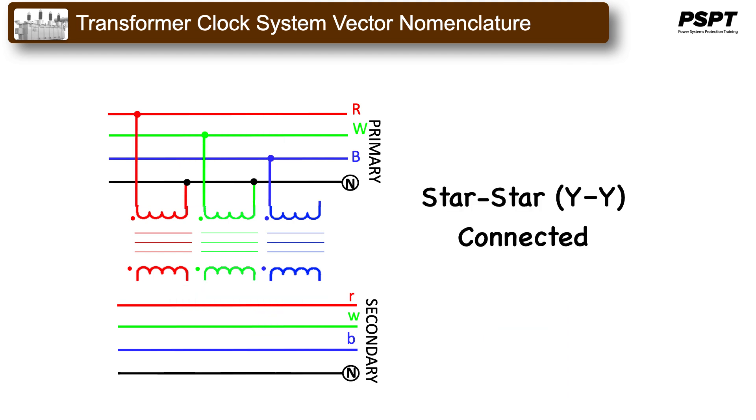Take, for example, a star-star, or YY-connected transformer. We have already looked at this connection, and it is fairly straightforward. However, if we reverse the connections of each of the secondary windings, it would still be YY-connected, but certainly the secondary phasors would have to be different.